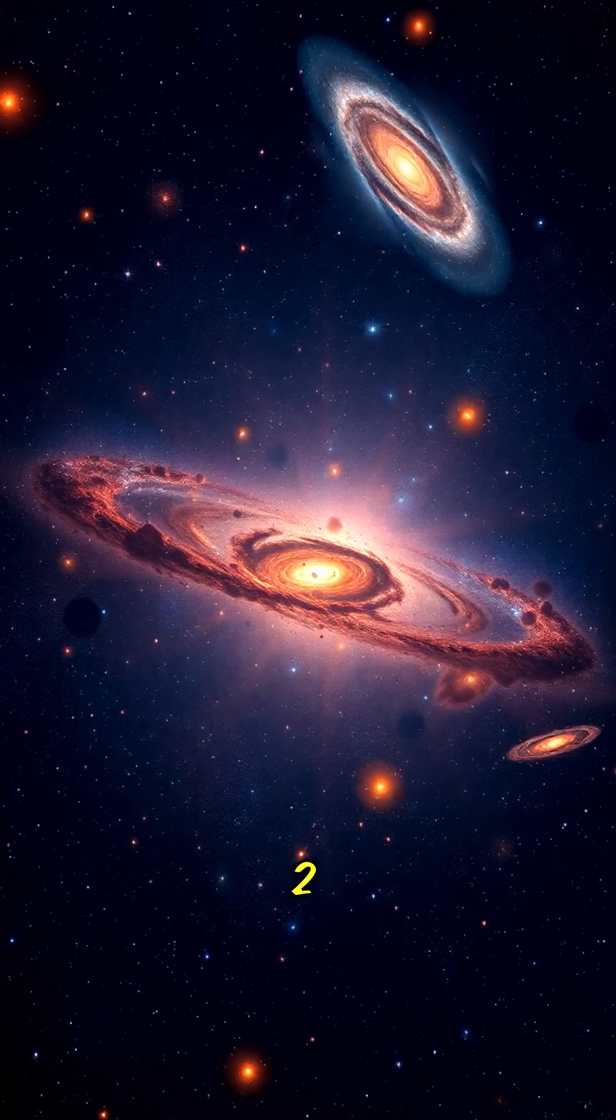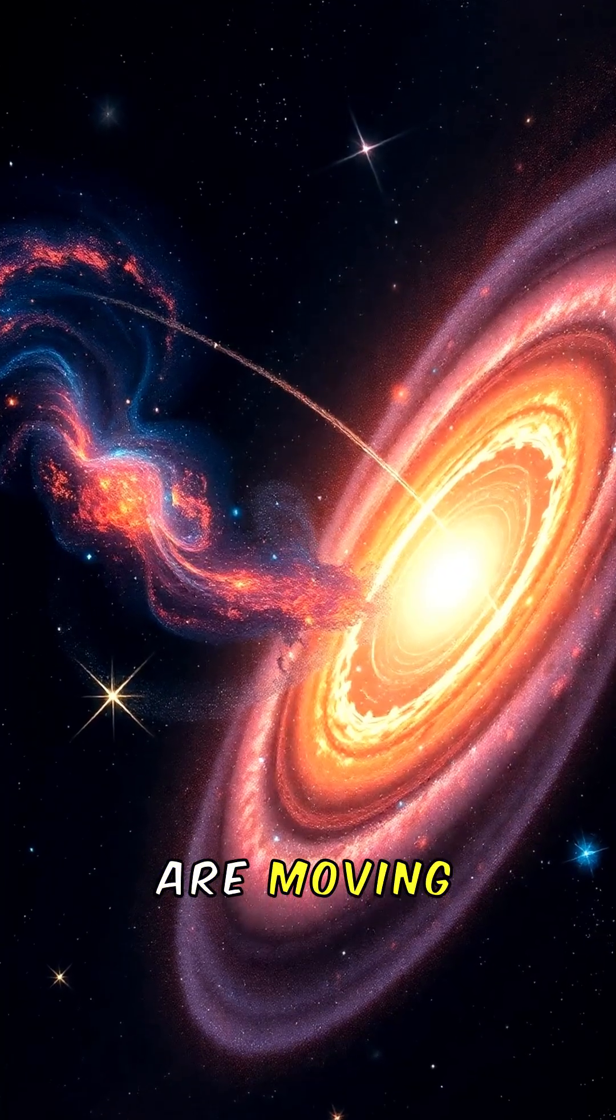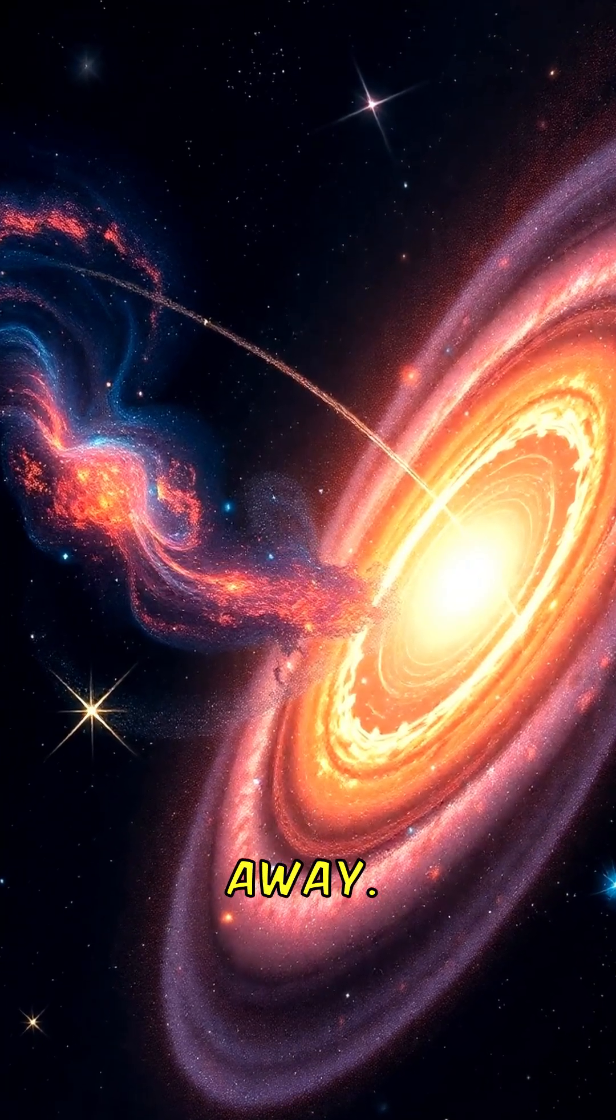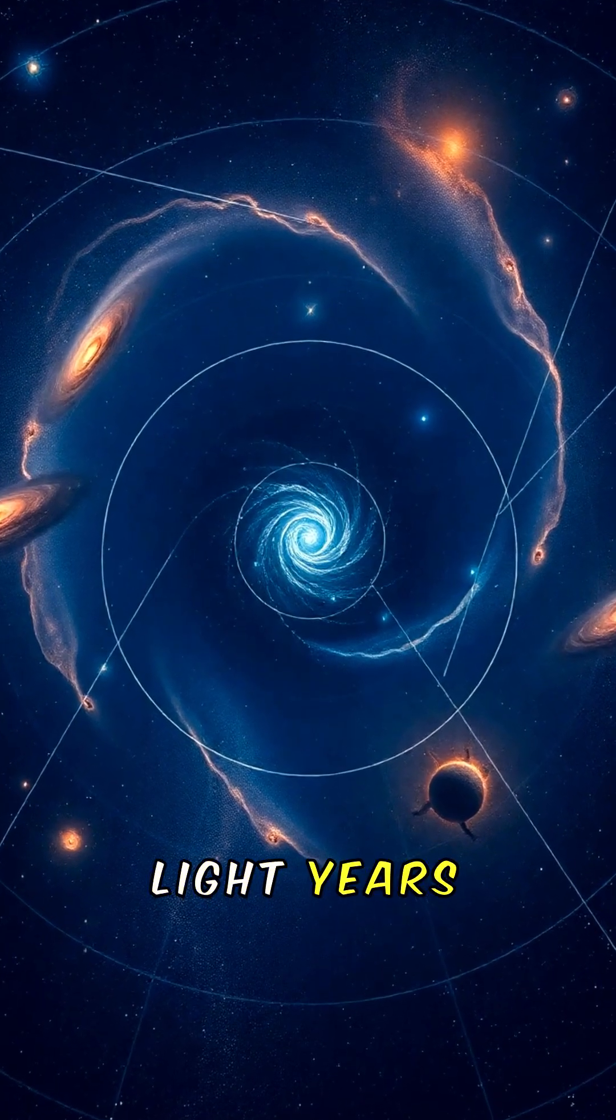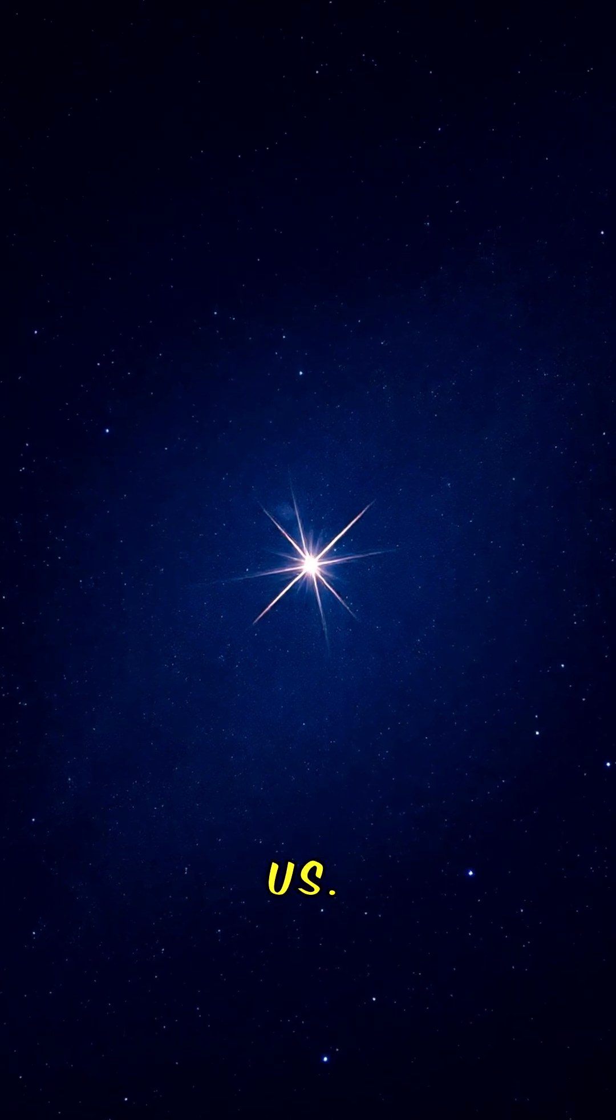Did you know there are more than 2 trillion galaxies in the observable universe? Some galaxies are moving toward us while others are drifting away. The observable universe is about 93 billion light years across. Light from distant stars can take millions of years to reach us.